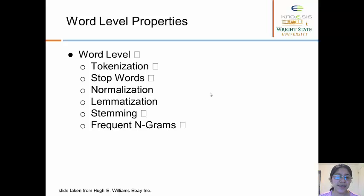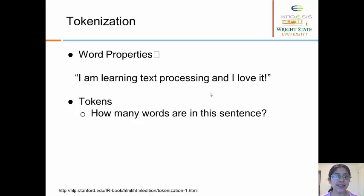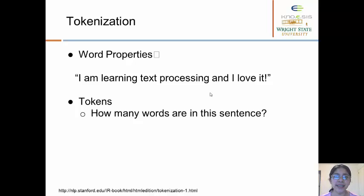So let's begin with the first one: tokenization. So far we've used this idea without formally defining it. Given a character sequence and a defined document unit, tokenization is the task of chopping it up into pieces — into smaller blocks called tokens — while throwing away certain characters such as punctuations or special characters.